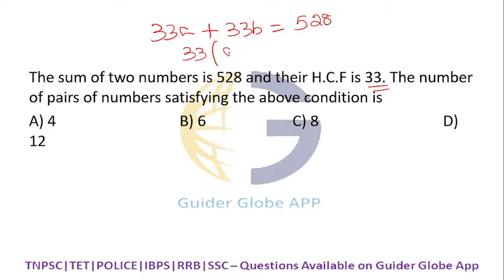That is 33 into a plus b is equal to 528. What is a plus b? If you divide 528 by 33, we get 16. 33 goes into 528 sixteen times with remainder 19, making 198, which means 16.